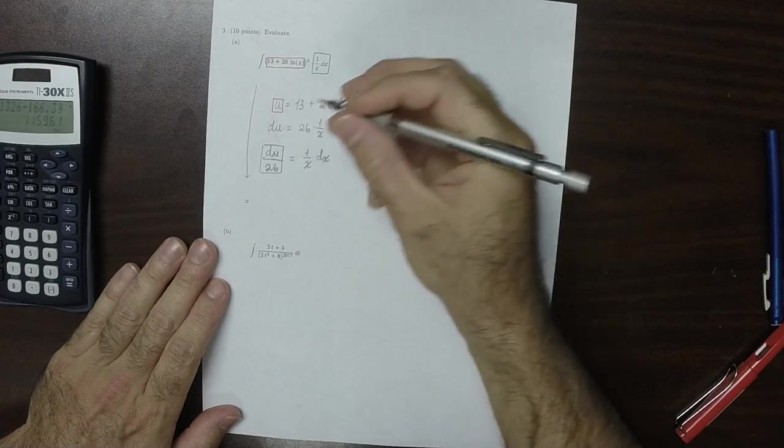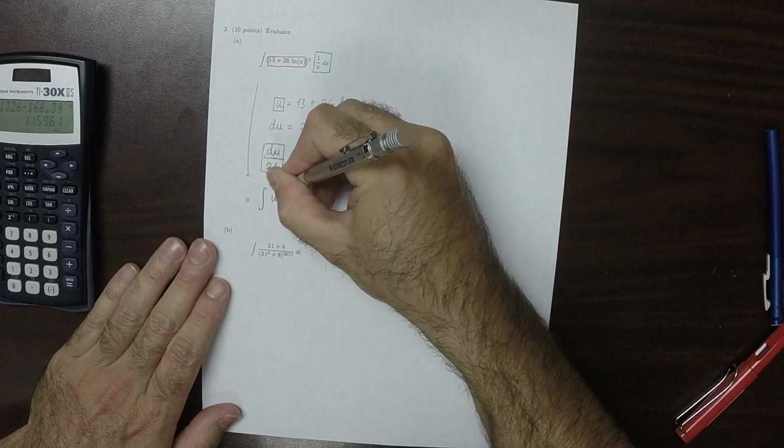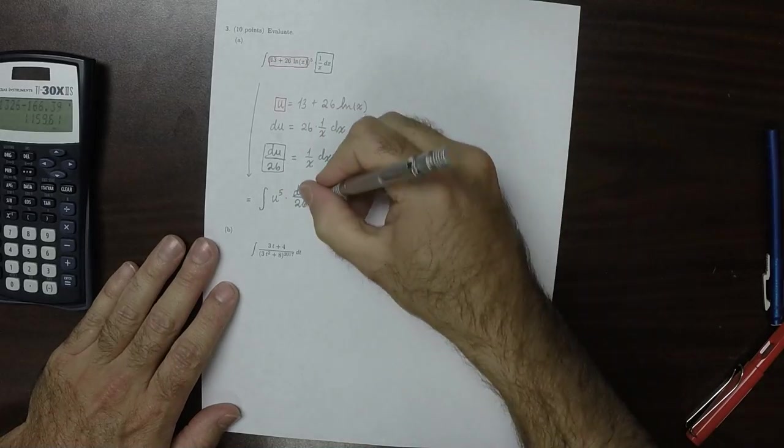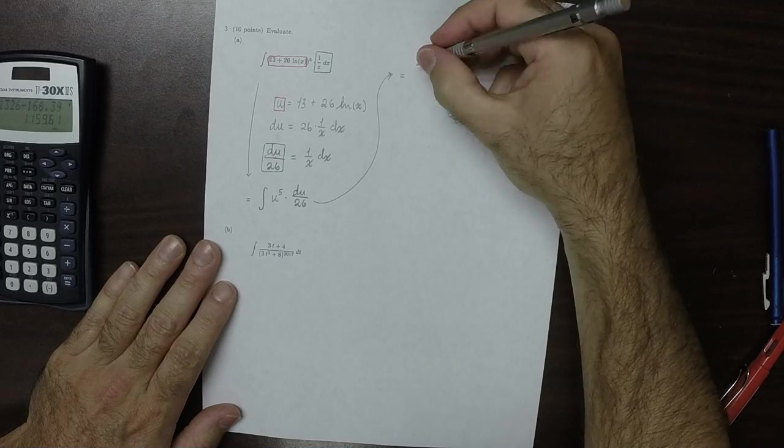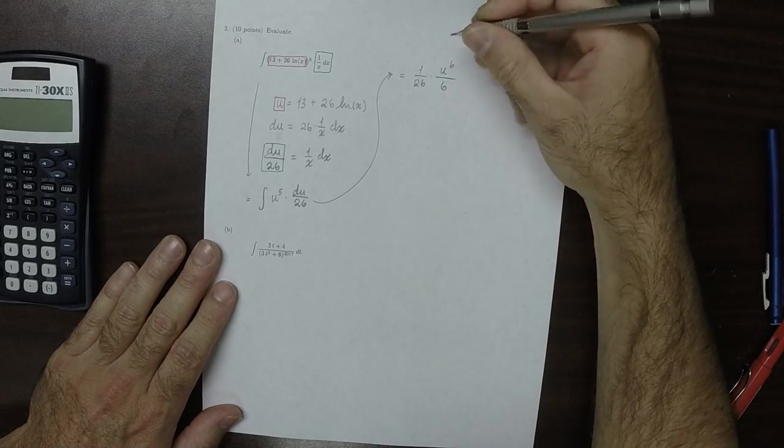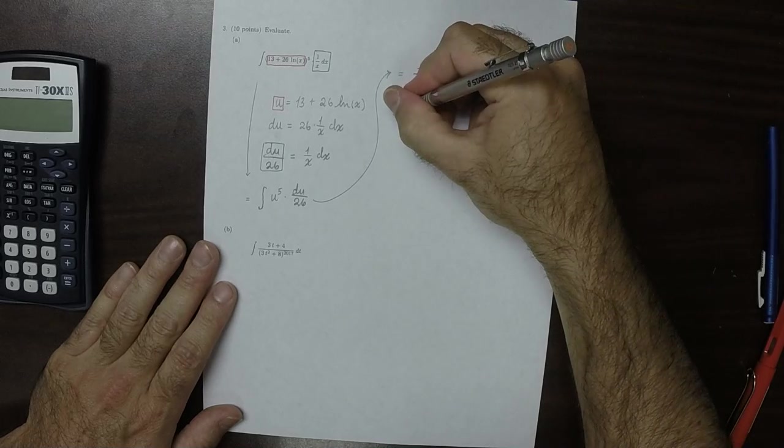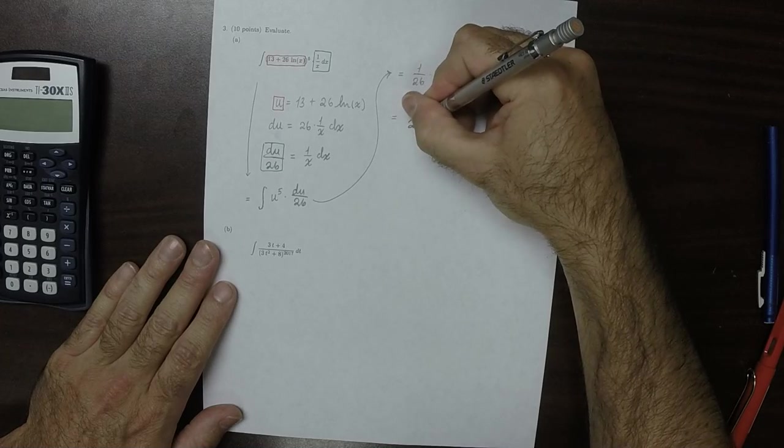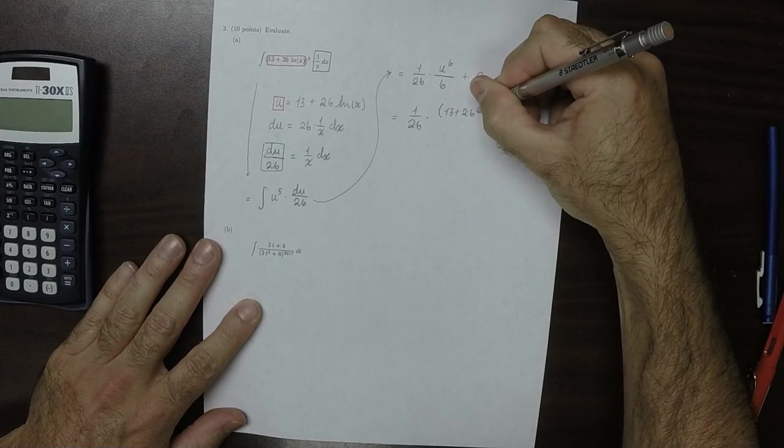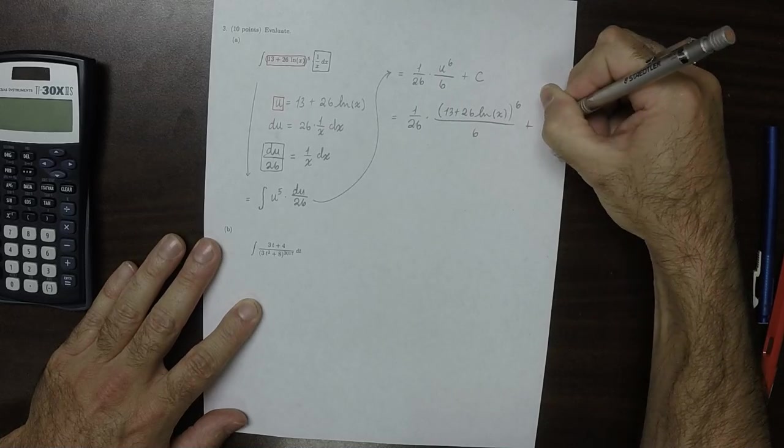And all of this part here is being covered by this differential. And after that transformation, the new antiderivative is antiderivative of u^5 and then du over 26. So that is 1 over 26 times u^6 over 6 plus a constant. And then we need to get back into x's. So this would be 1 over 26 times (13 plus 26 log x) all raised to 6 over 6 plus a constant.